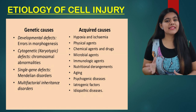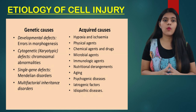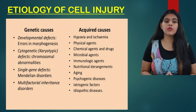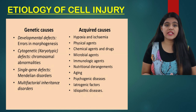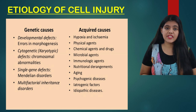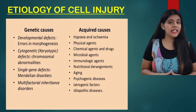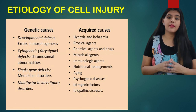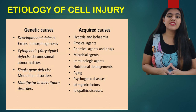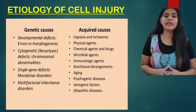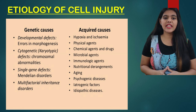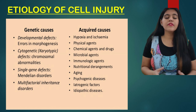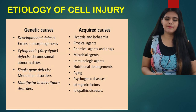The second category is acquired causes, which include hypoxia and ischemia, physical agents, chemical agents, microbial agents, immunological agents, nutritional derangements, aging, iatrogenic causes, and so on, which will be discussed in detail.